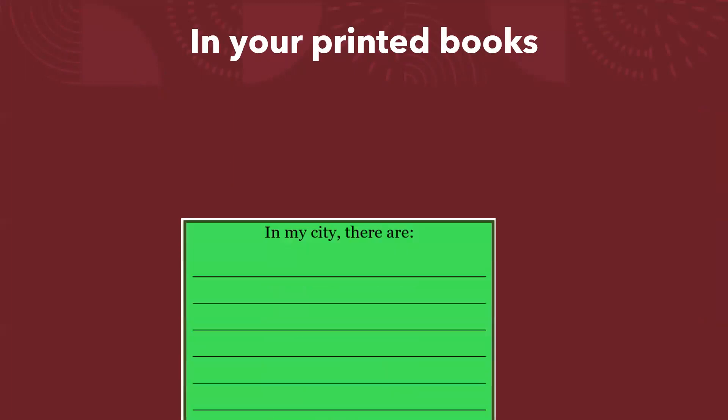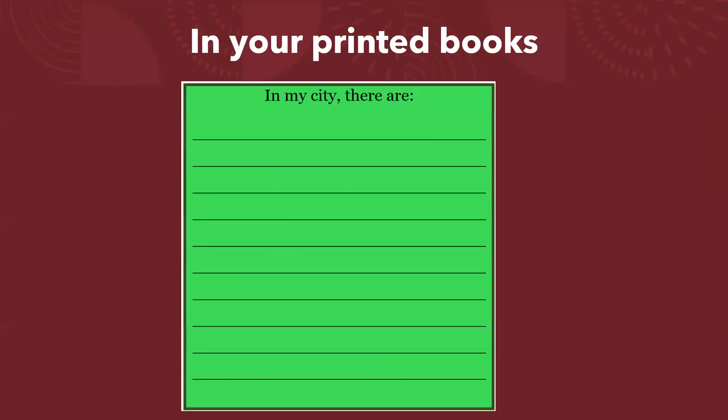In your printed books you have to write the plants — trees or any other plant, flowers or any other that you have or that you can find in your city. For example, in my city there are daisies and bushes.